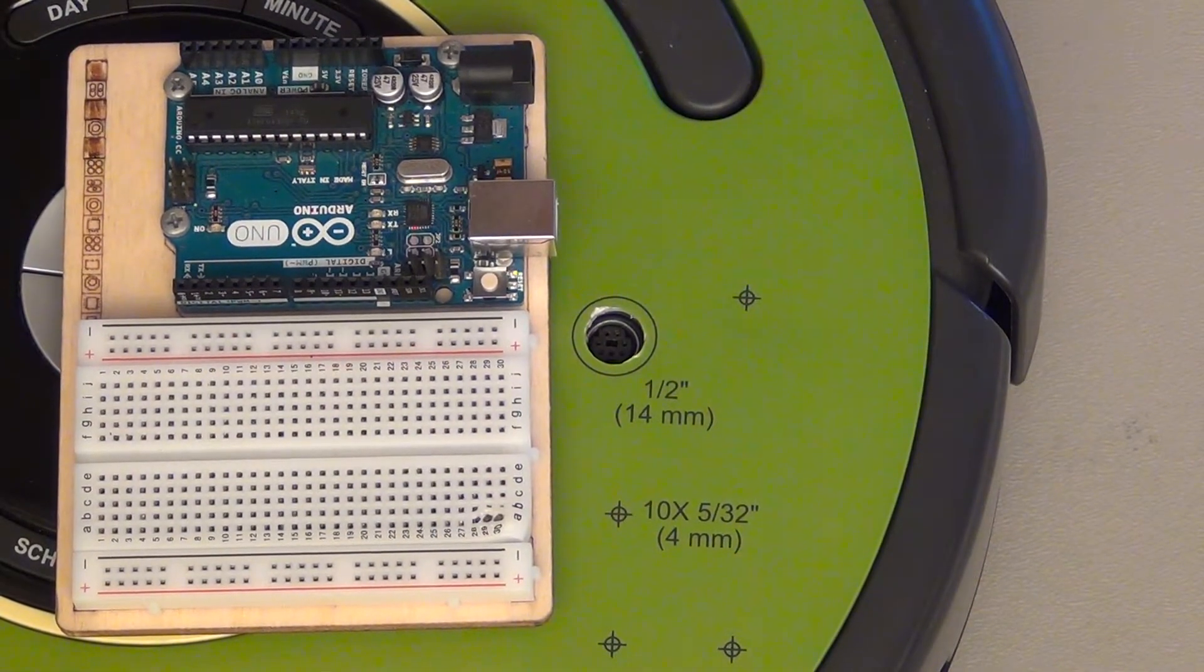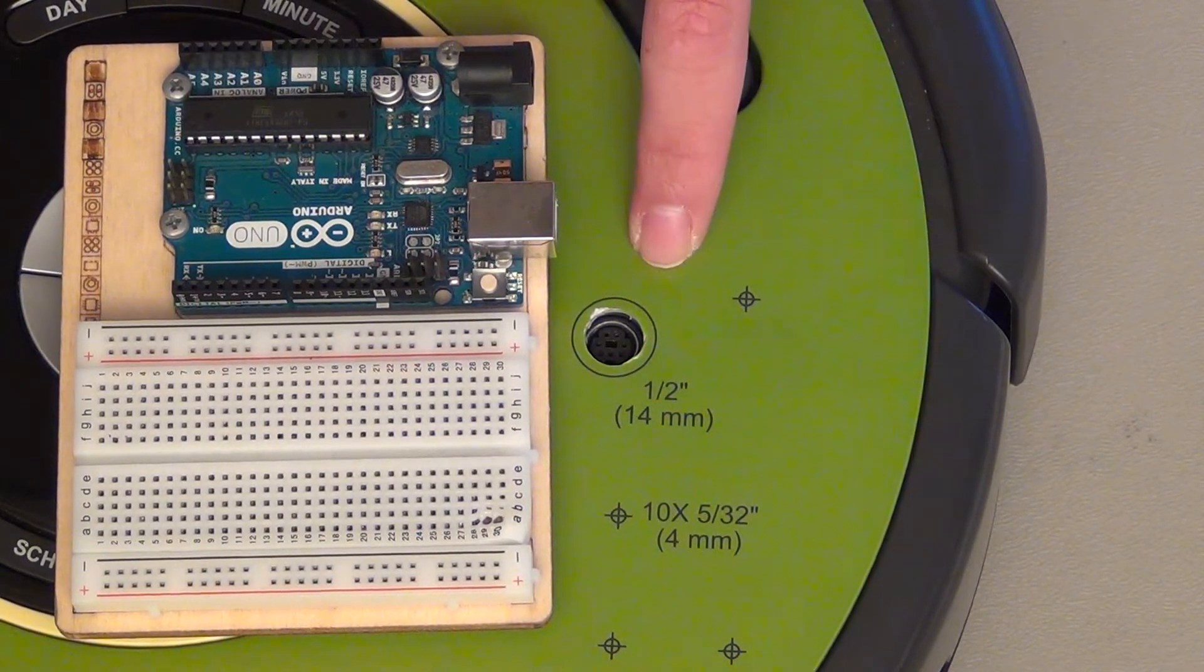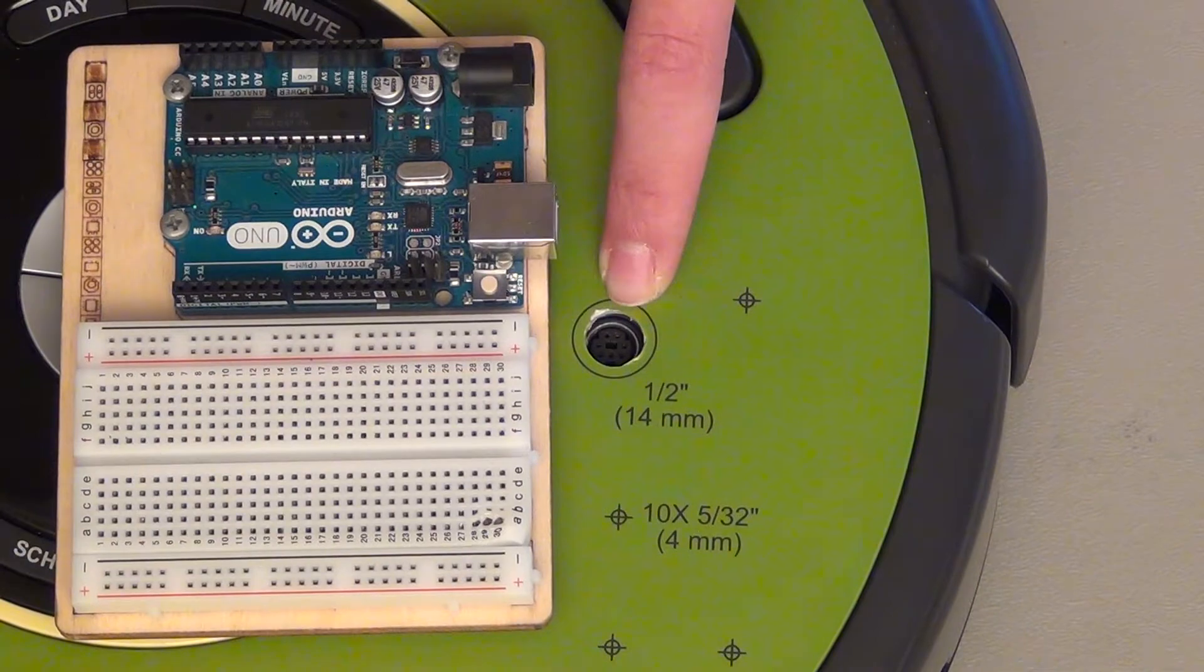All right, hello everybody. I thought I'd just do a close-up video of connecting the Arduino Uno to the Mini-Din on the iRobot Create.